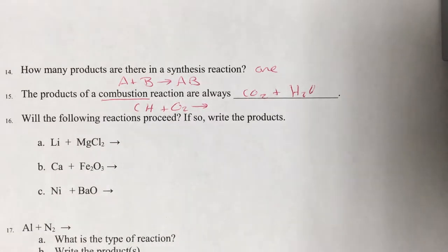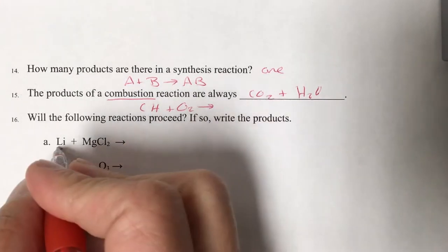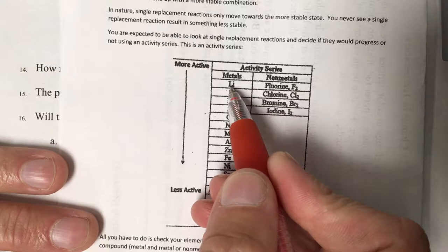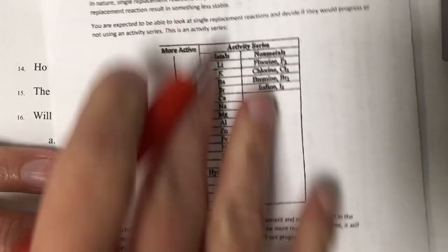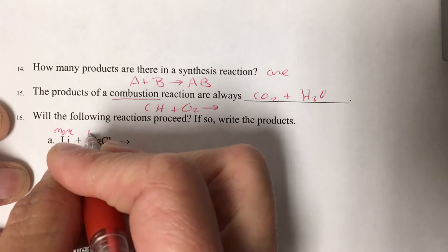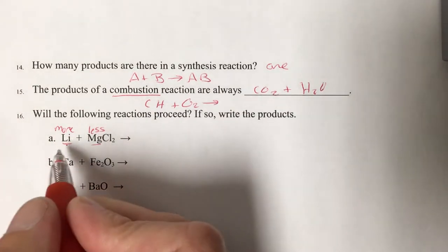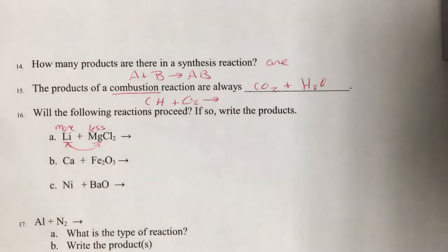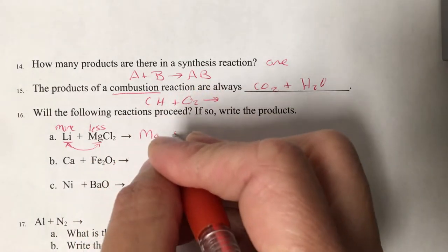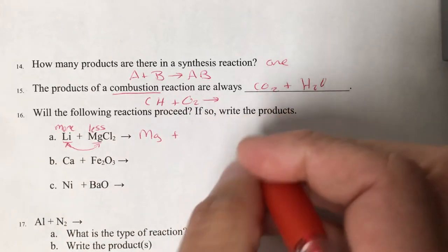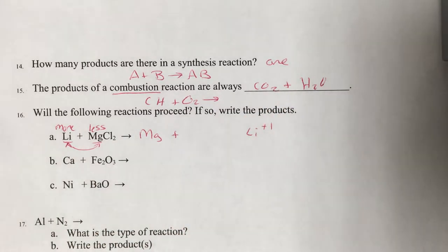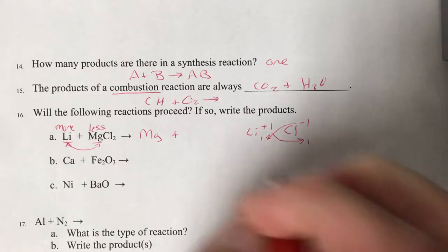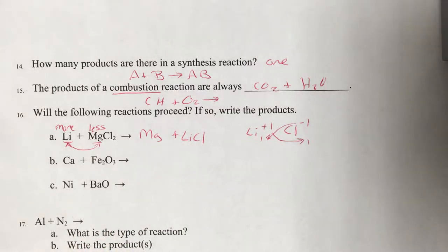Number sixteen — will these reactions proceed? We check the activity series. First: lithium and magnesium. Lithium is at the top of the list; magnesium is almost halfway down — lithium is more reactive. For a reaction to proceed, the more reactive metal must be the free element — it is, so this will proceed. Magnesium becomes the free metal. For the lithium-chlorine compound, using the criss-cross method: lithium is +1 (group 1), chlorine is -1 (group 17) — swapping ones gives LiCl.